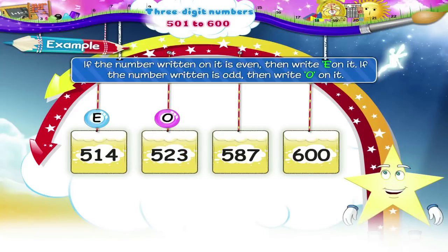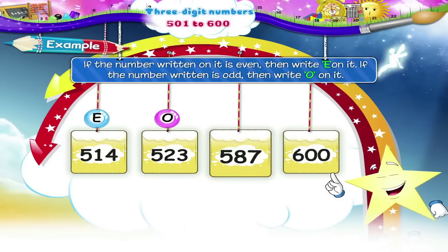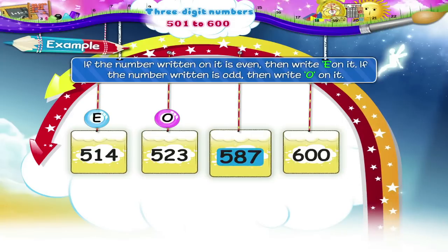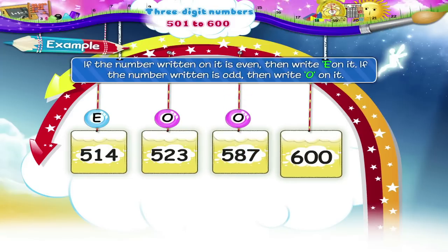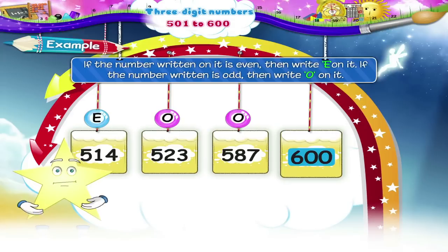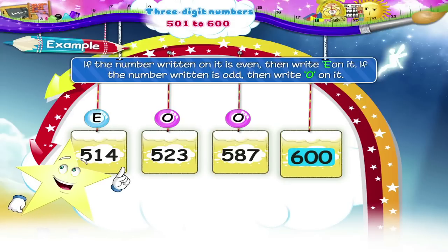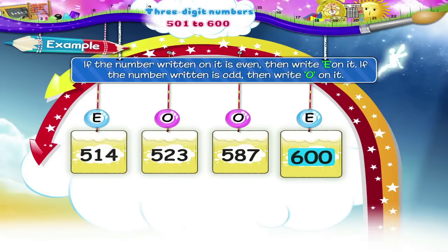What is the next number Starry? It is 587. The units place digit is 7, so 587 is an odd number. The next number is 600. Should we write O or E on this card? We should write E because 600 is an even number.